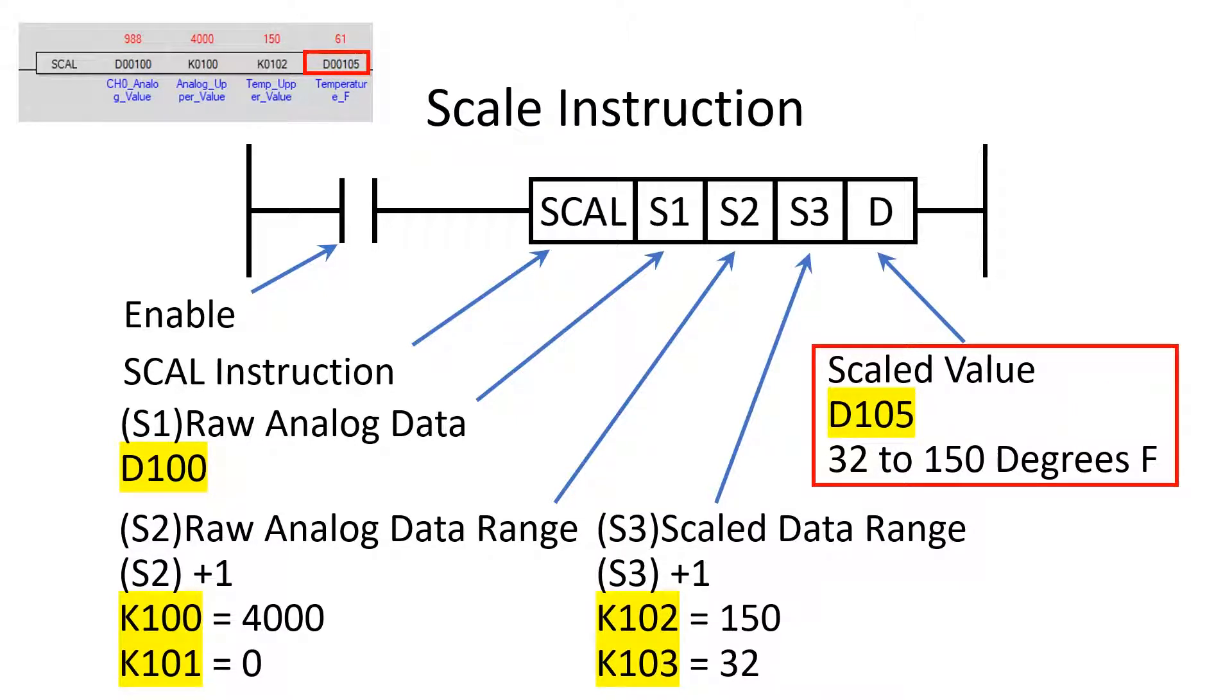Operand D stores the scale value from the analog device. In this case, it is a temperature value stored in the memory location D105.